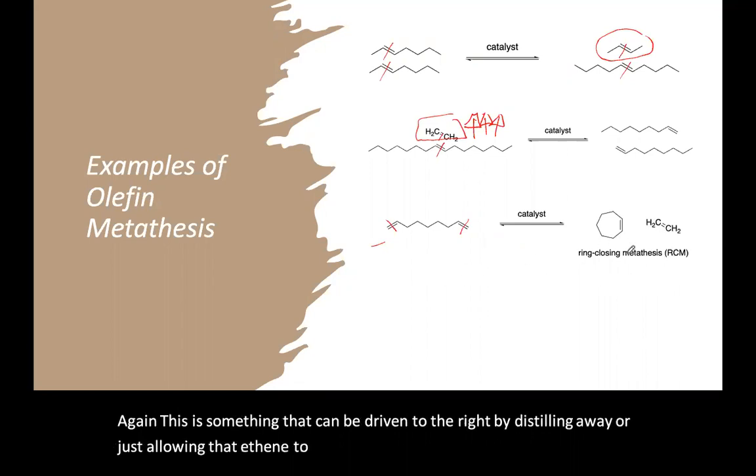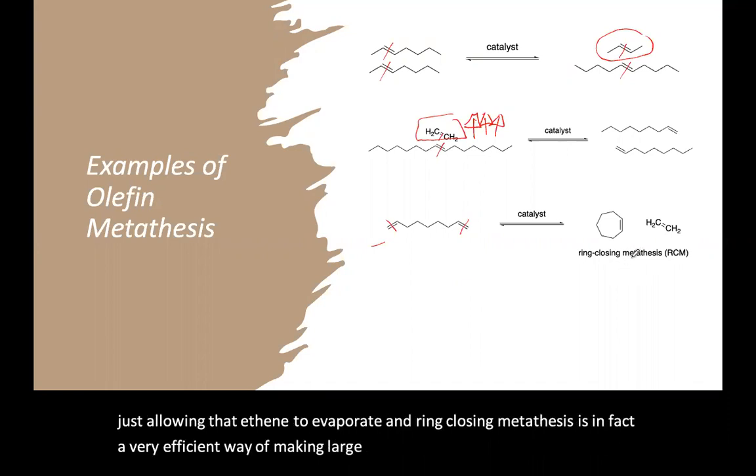And ring closing metathesis is, in fact, a very efficient way of making large rings. It's very important in synthesis of pharmaceuticals, for instance.